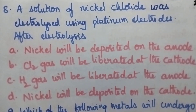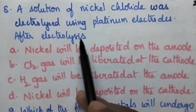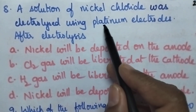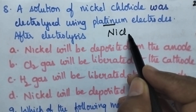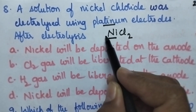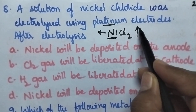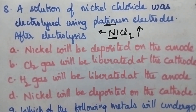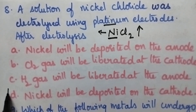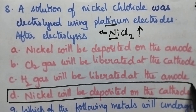A solution of nickel chloride was electrolyzed using platinum electrodes. Platinum electrodes are inert electrodes. Here the solution is nickel chloride, so nickel will be deposited at the cathode and chlorine gas will be liberated at the anode. Option D — nickel will be deposited on cathode — is the right answer.